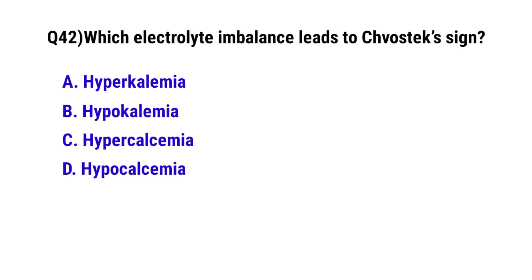Question No. 42. Which electrolyte imbalance leads to Chvostek's sign? The correct option is D: Hypocalcemia.